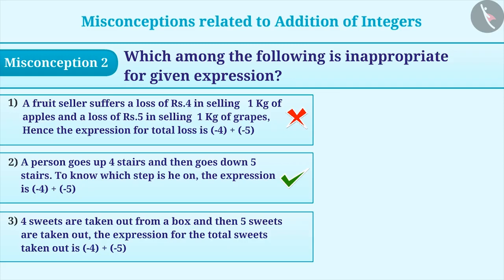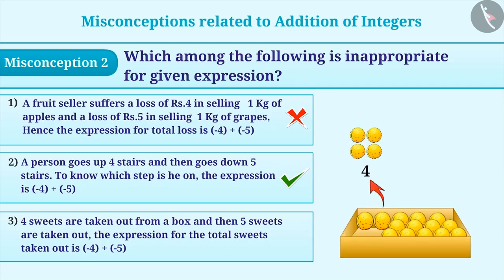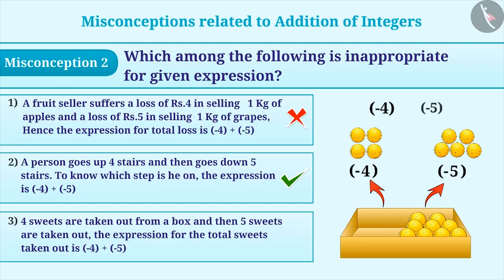The third statement shows that initially 4 sweets are taken out and then another 5 sweets are taken out from the box. Since the sweets are taken out from the box, this is represented as a negative sign. Therefore, its value can be calculated by adding minus 4 and minus 5. Thus, statement 3 is also correct for the given expression, meaning it cannot be the answer to the given question. Sometimes, to find the number of sweets taken out, calculation is done and the statement is represented as minus 4 minus minus 5, which is an incorrect way to represent the situation.